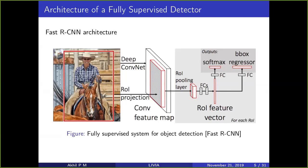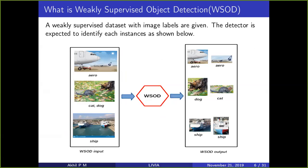In weakly supervised settings, we are given only image-level labels — for example, there's an airplane, there's a cat — only the image-level label is given. The objective is to localize instances in the image. The count of instances is not known. For example, in the first image there are two airplanes, but that count information is not given — you just know there is an airplane, and the algorithm must localize each of them. In the second case there are multiple categories like cat and dog, and you have to localize each of them.